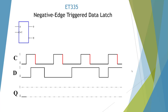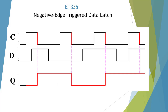Here's our negative edge-triggered device, and we're interested only in the high-to-low transition, which is already marked for us. Going through the diagram: it's high, then low, then high, and high. Here's our CAD drawing and it looks like we did very well — we nailed it.